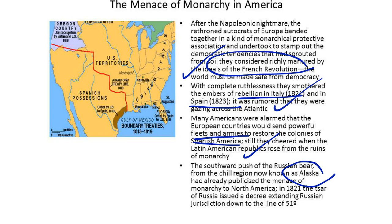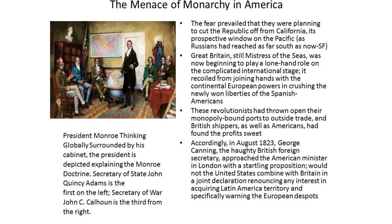The southward push of the Russian bear from the region now known as Alaska had already publicized the menace of monarchy to North America. In 1821, the Tsar of Russia issued a decree extending Russian jurisdiction down to the line of the 51st parallel. The fear prevailed that they were planning to cut the Republic off from California, its perspective window on the Pacific, as the Russians had now reached as far south as San Francisco. Great Britain, still mistress of the seas, was beginning to play a lone hand role on the complicated international stage, recoiling from joining the continental European powers in crushing the newly won liberties of the Spanish Americans. These revolutionists had thrown open their monopoly-bound ports to outside trade, and British shippers as well as Americans had profited.